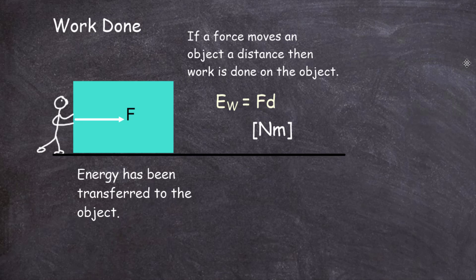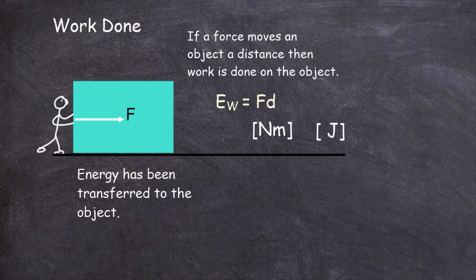Since work done is really a form of energy transfer, the newton metre can be equated to the joule. In many cases it's quite useful to think of the work done by an object in terms of the units newton metre. So to recap: if a force does work on an object it moves it through a distance, and that work done is energy being transferred to that object. The units of work done are newton metres, equivalent to joules, so one newton metre equals one joule.